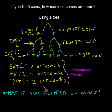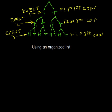The other thing I want to do is talk about another way of counting the possibilities. You might not always be able to go directly to the Fundamental Counting Principle. So let's look at another way to count besides using a tree — it's called using an organized list. We're going to keep the tree in view and learn this new technique to count the number of possible outcomes.